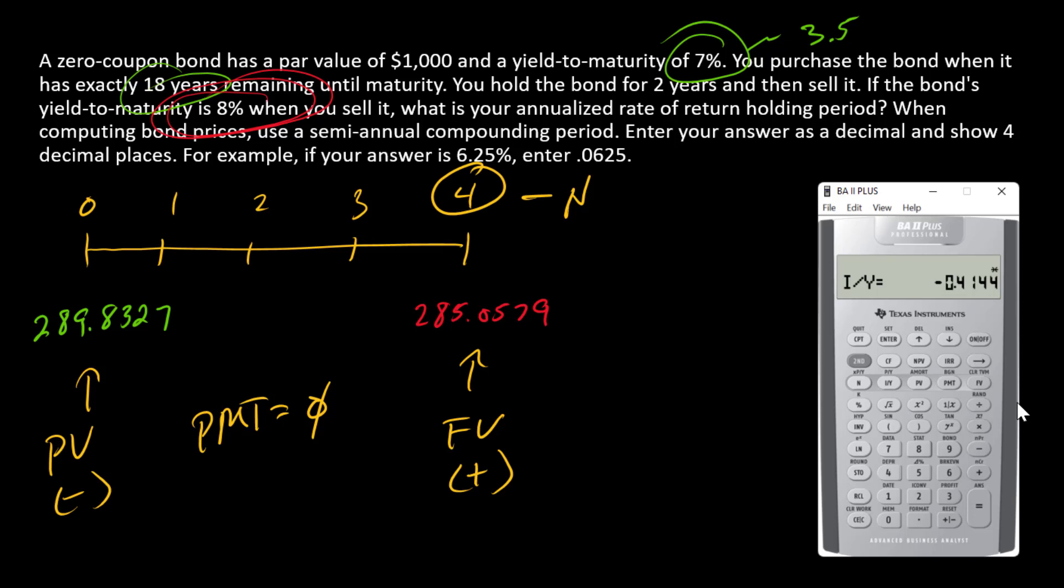If I want to annualize that, I'm just going to double the number and report -0.82%.